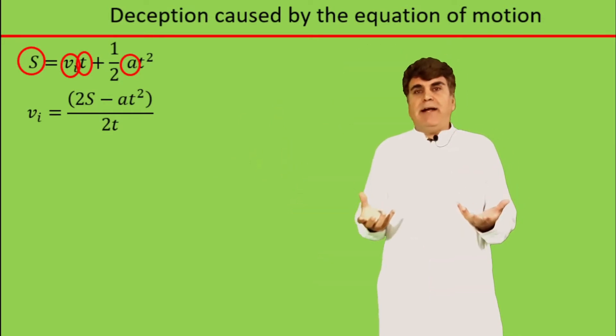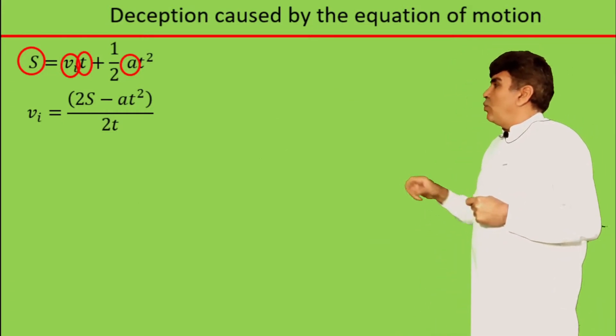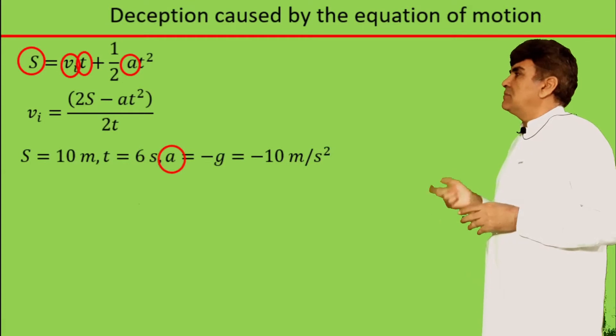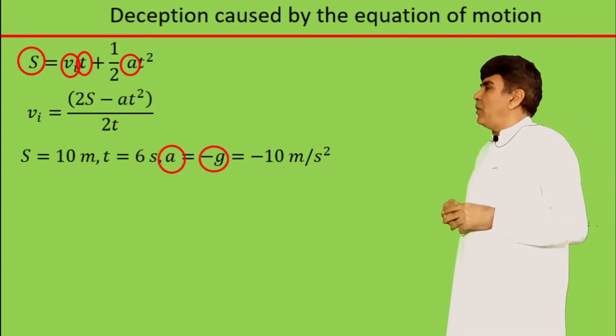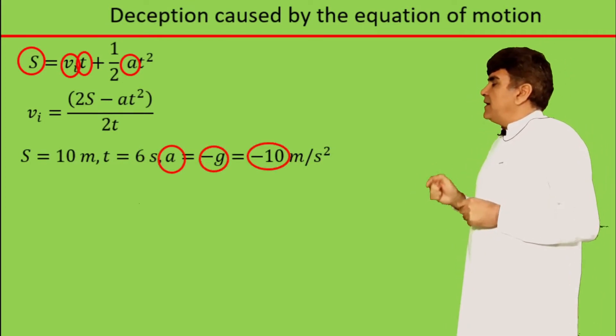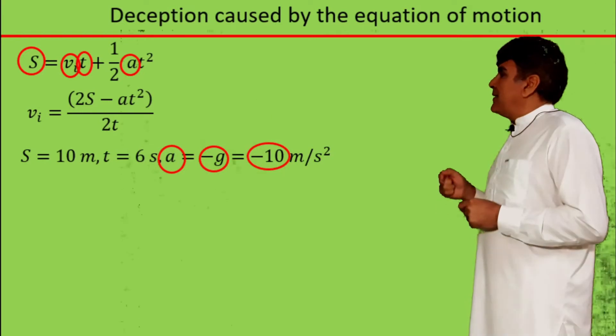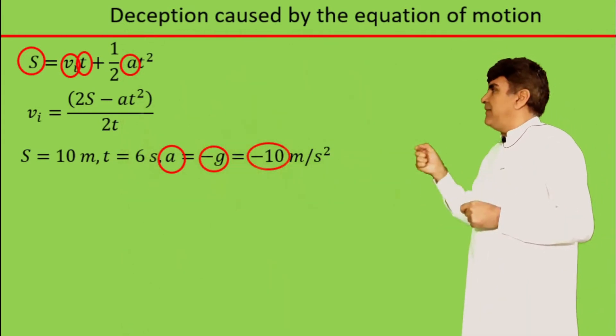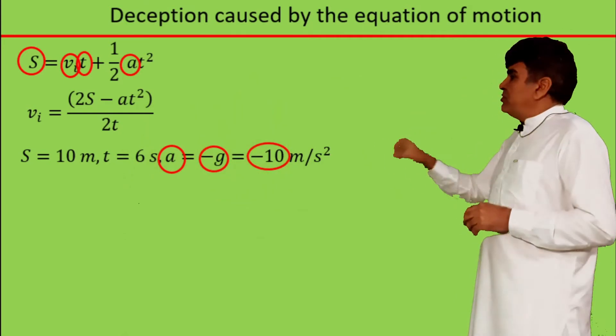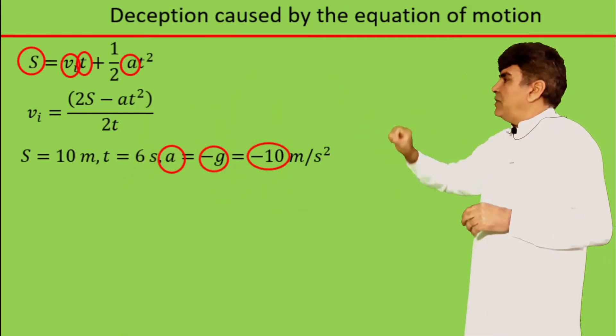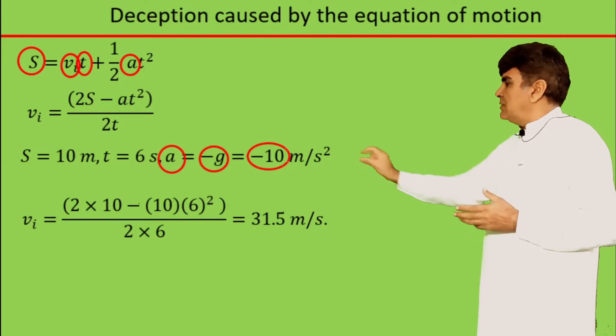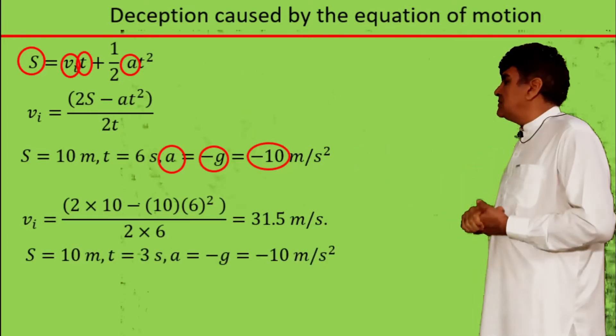Very easy to find. Just plug in this data along with a equals minus g equals minus 10 meters per second squared, where the negative sign of acceleration accounts for motion being opposite to the gravity. If I substitute this data into that equation and carry the numerical calculation, it gives me 31.5 meters per second.